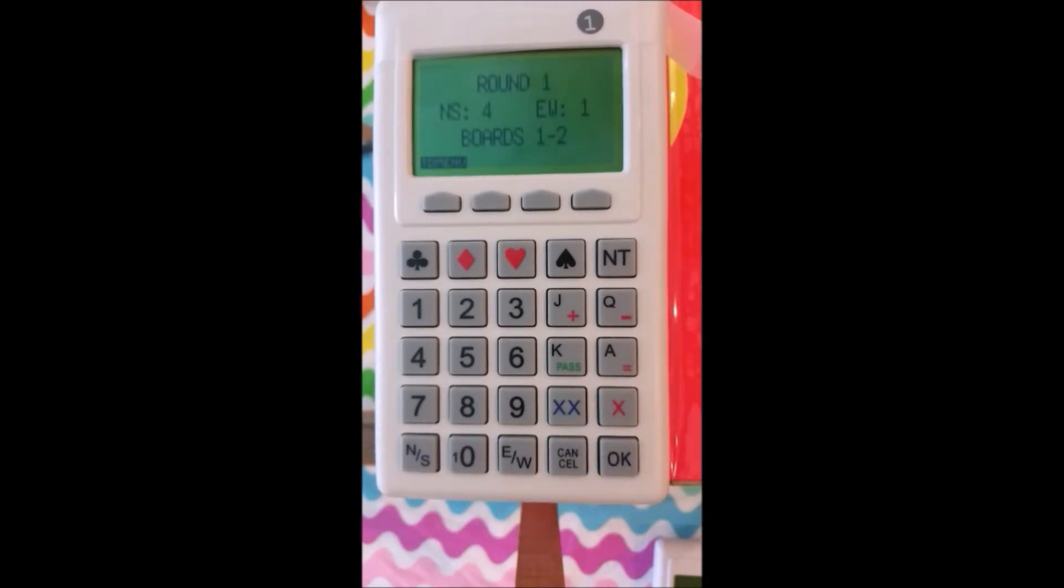All right, now it's telling us that we're going into Round 1 and Boards 1 and 2. Now this will be different depending on which kind of movement we have, whether we have a Mitchell or a Howell. Those numbers will differ somewhat, but you get the idea. So here, we went off. We'll hit OK. That turns us back on.